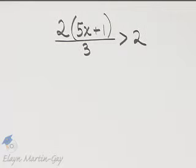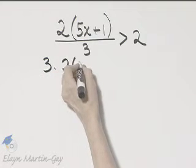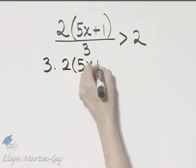How do we begin solving this inequality? It's got fractions, so let's multiply both sides by the LCD, which would be, in this case, 3.